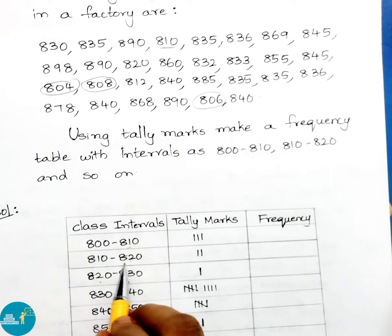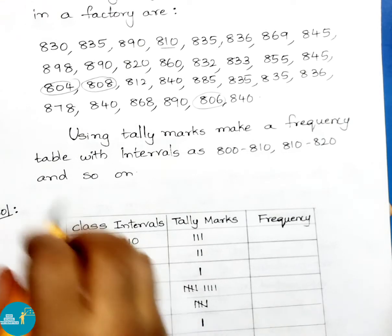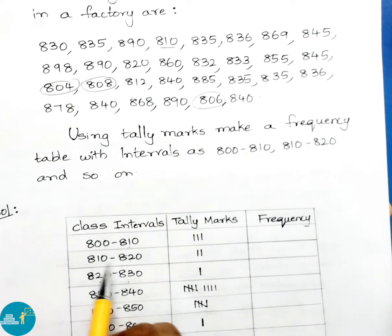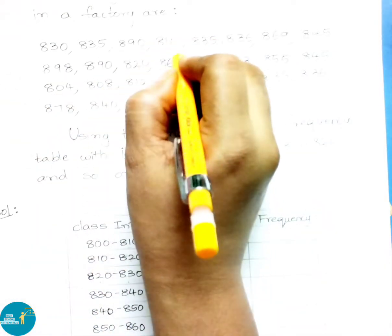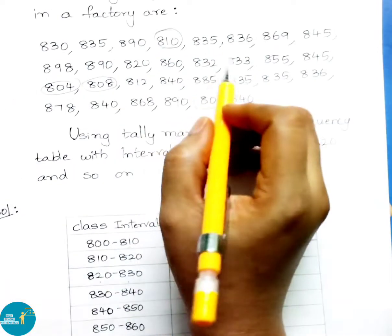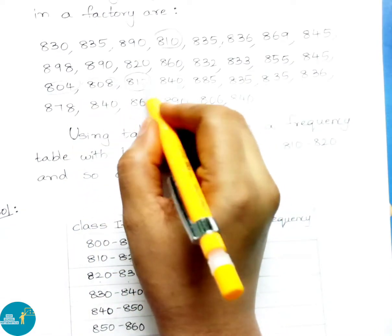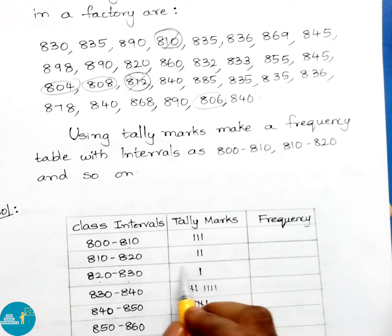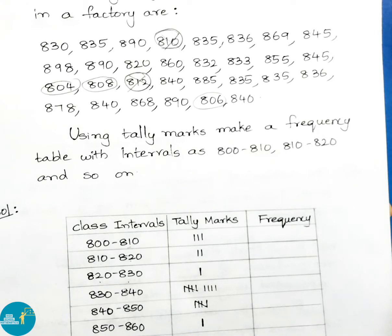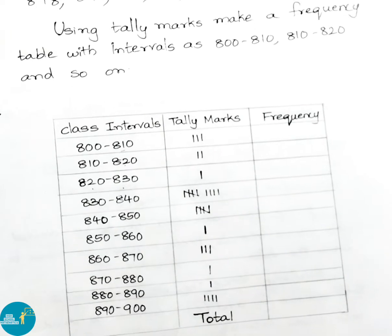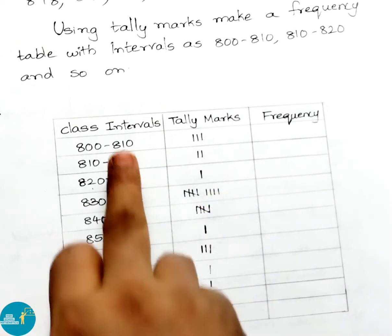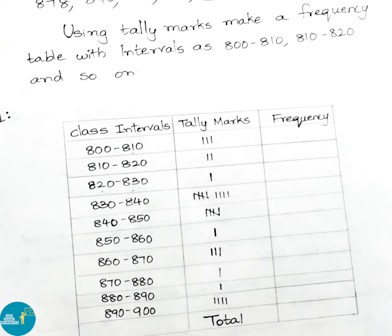Similarly we take all remaining class intervals. I have already drawn the tally marks for all groups. Now we write the frequency by counting the tally marks: first group = 3, next = 2, then 1, then 9, then 5.